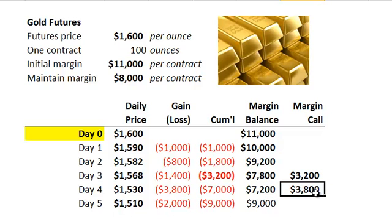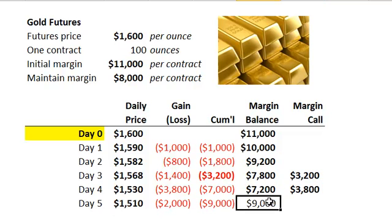So with the margin call, the margin account is back at $11,000, although Alan's had to go into his pocket and deposit more cash. Then in day five, another drop, this time of $2,000. The $11,000 margin balance drops down to $9,000, but that's not enough to trigger a margin call. Because there have been two margin calls, along with a lot of mark-to-market daily settlement losses, the margin balance is currently at $9,000 — and that would be the answer.